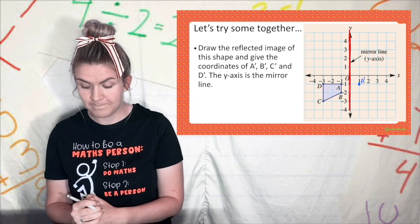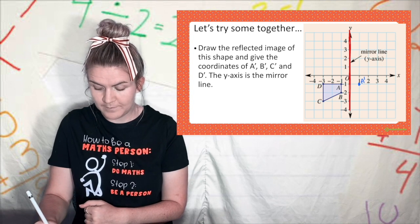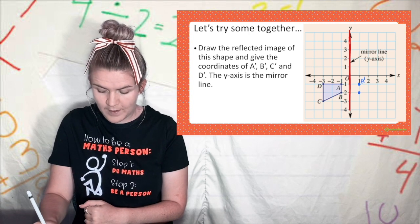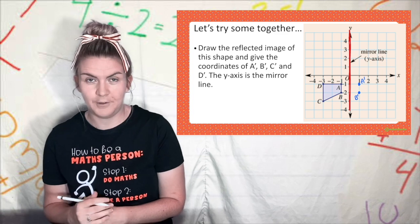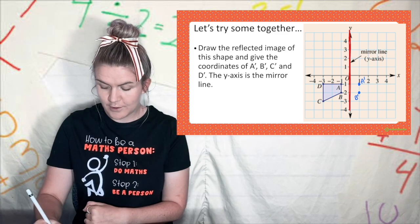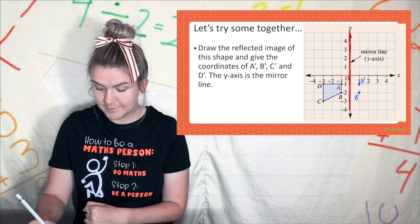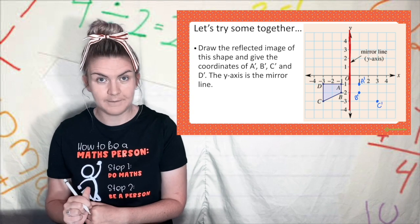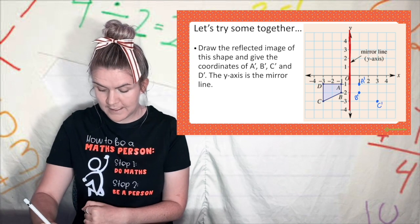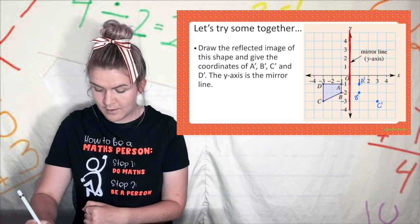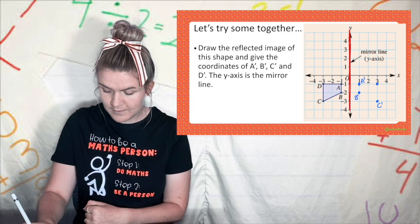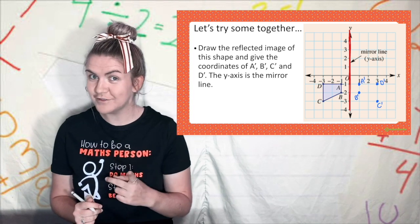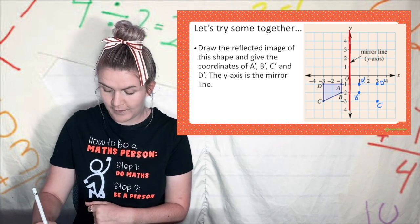Now I'm going to try b. B is also one point away so I go along one point, that's b prime. C is one, two, three so on the other side I'm going to count one, two, three and that's c prime. Lastly d, one, two, three, one, two, three, d prime. Then using a ruler I'm going to connect up my points.